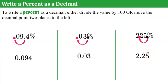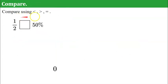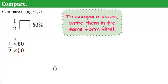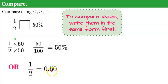Now we're going to compare using less than, greater than, or equal to. We're comparing one half to 50%. To compare values, we want to write them in the same form first. You can write them both as decimals, write one half as a percent, or write the percent as a fraction. If I multiply both numerator and denominator of one half by 50, I get 50 over 100, which equals 50%. Or one half equals 0.50, and moving the decimal two places right gives 50%. So one half is equal to 50%.